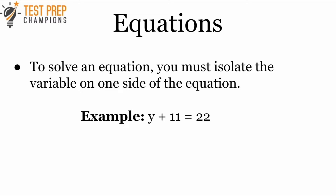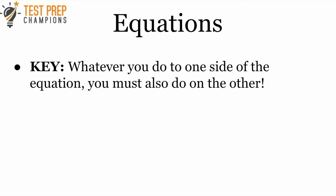We do this by recognizing we have addition — Y plus 11 — and then doing the inverse, which is the opposite operation. The opposite of addition is subtraction. So to solve this, we subtract 11 from both sides. The key with solving equations is that whatever you do to one side, you must also do to the other.